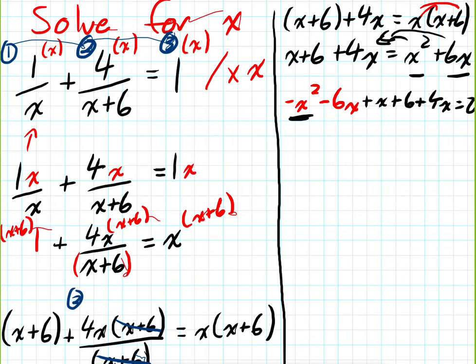The x squared is by itself. So I can't do anything to minimize it. The negative 6x, positive x, and 4x, they can all become one term. We can collect them into one term. So we'll get negative x squared. This becomes negative x. And then finally, we just have plus 6 is equal to 0.